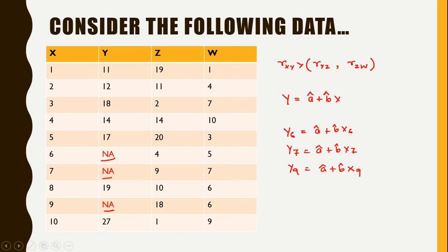The next missing value imputation method we are going to study is called KNN imputation. Before we do so, we will get an idea about what the concept of KNN is, and in the coming videos we will discuss the concept of KNN or the K nearest neighbor.